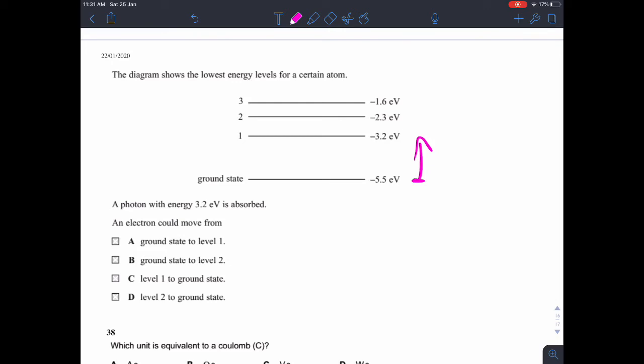And it looks like 3.2 electron volts. If we add 3.2 electron volts to minus 5.5, we get minus 2.3. So it looks like it's jumping from the ground state to level 2 there. So ground state to level 2 is B.